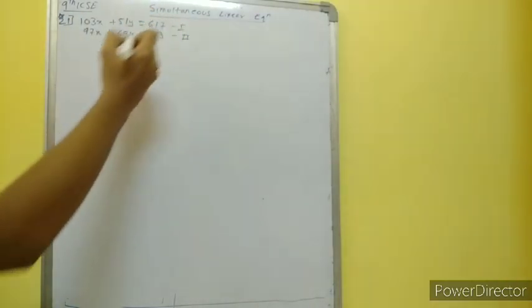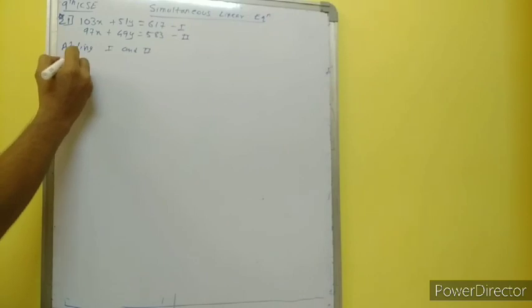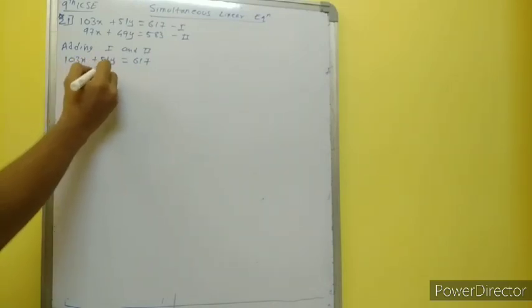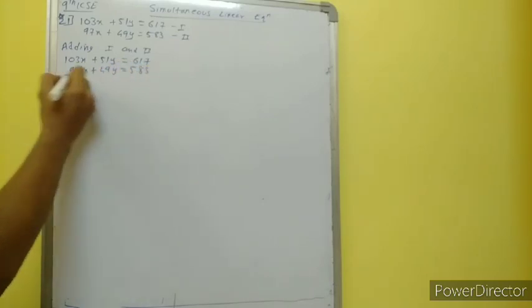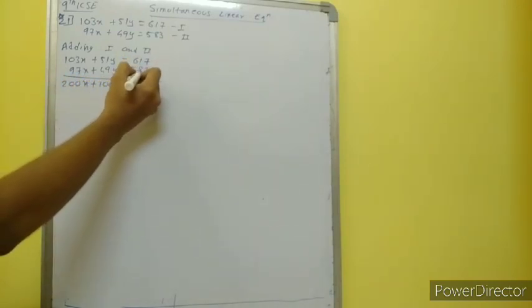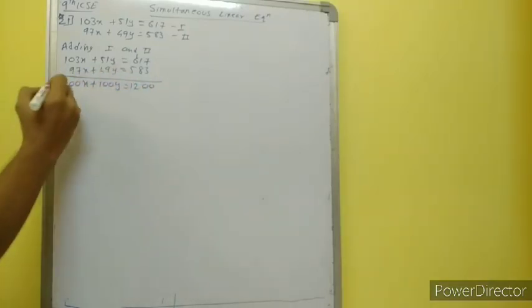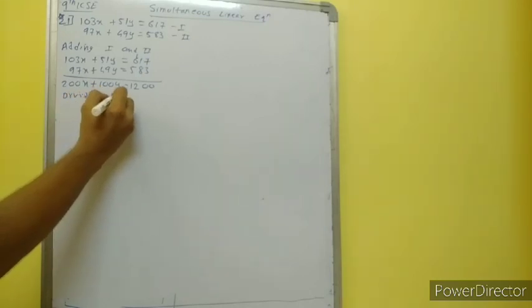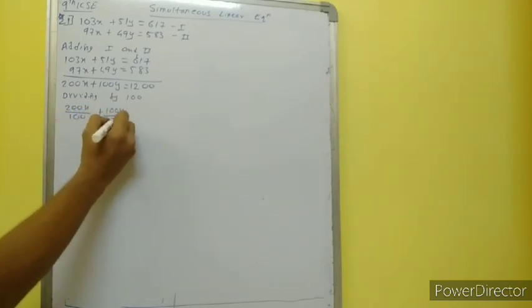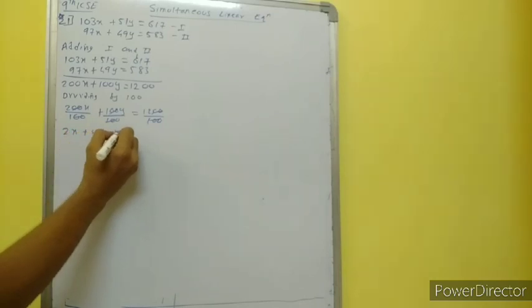So let's add equations 1 and 2. We have 103x plus 51y is equal to 617 and 97x plus 49y is equal to 583. When I add them I get 200x plus 100y, and 617 plus 583 is 1200. Now each and every term is divisible by 100. Dividing by 100: we have 2x plus y is equal to 12. We have a new equation — equation 3.